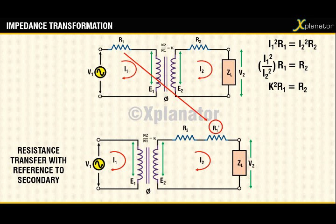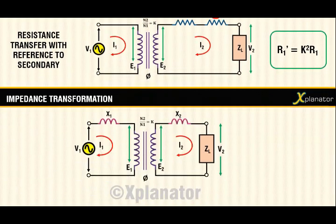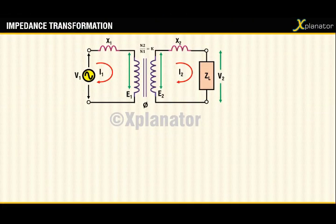The new resistance r1 dash will be equal to k² times r1. The same concept applies for reactance as well. If reactance transfer is desired, then the relation that is to be used is that inductance is directly proportional to the square of the number of turns.